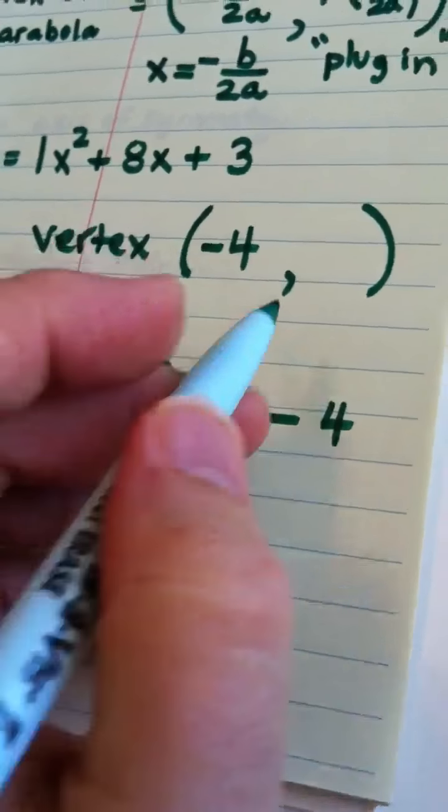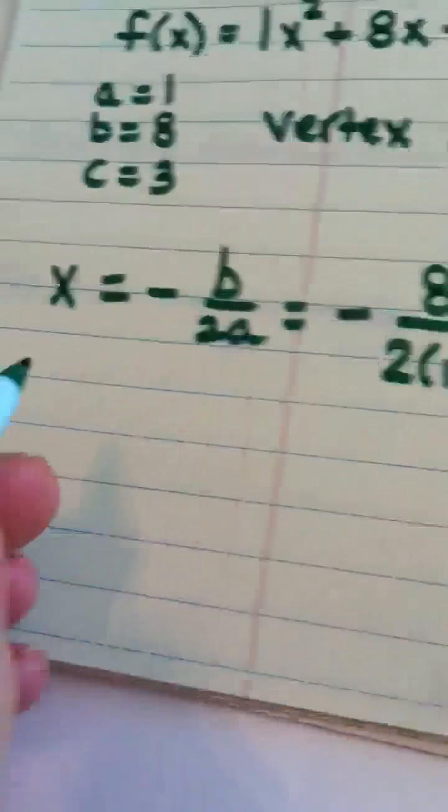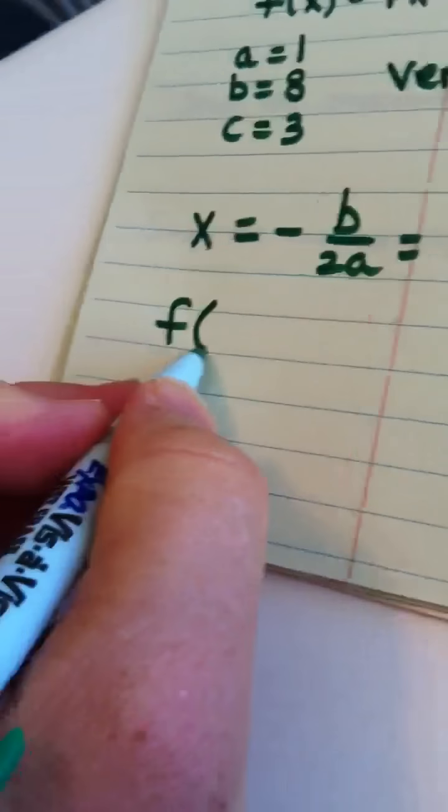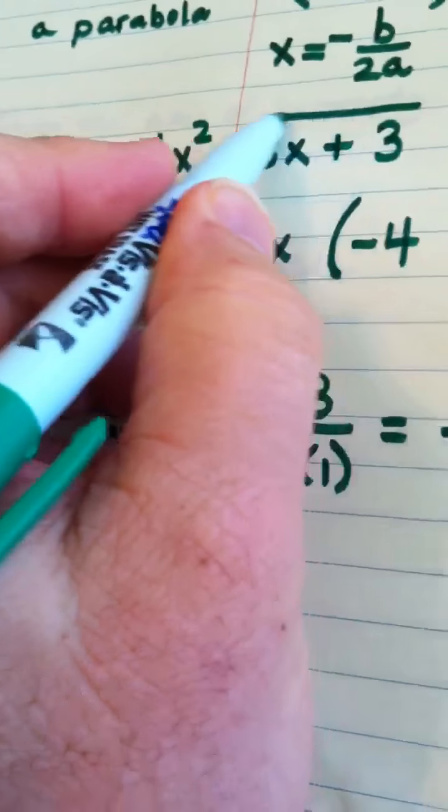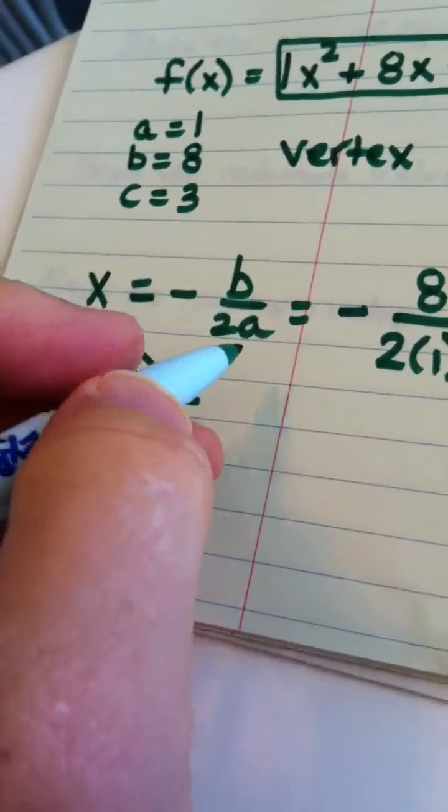And then, if I want to get the y-coordinate of the vertex, I take negative 4 and plug it into the function. I find f of negative 4. So, I go to this function, and I plug in a negative 4.